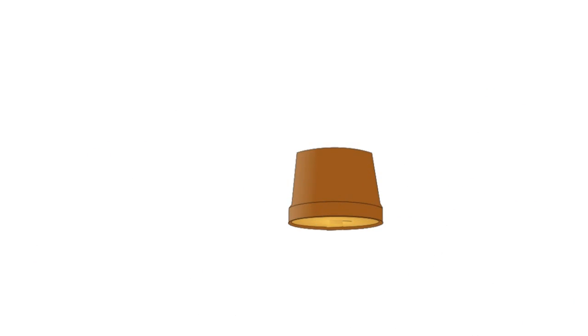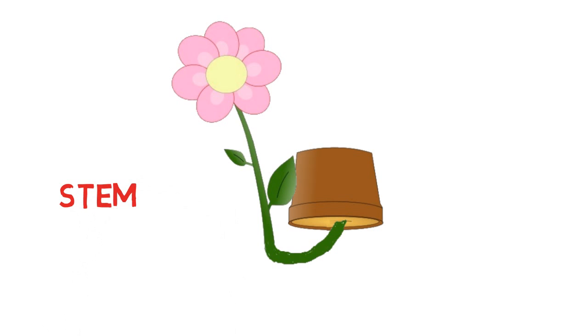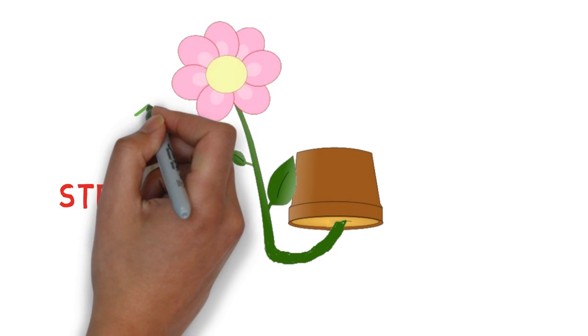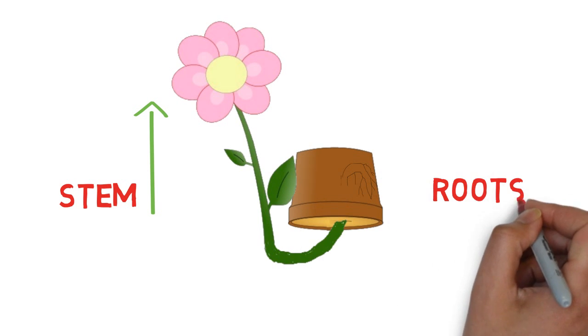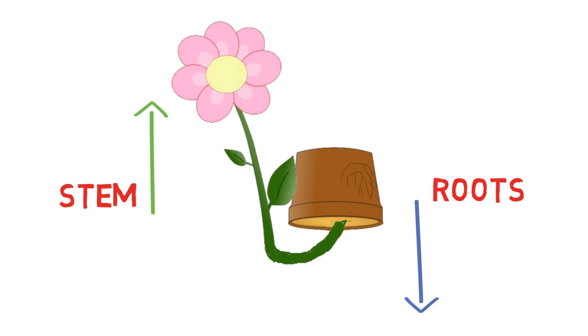Suppose you have a seedling in a pot and you turn it upside down. Then, the stem will take a U-turn and start growing in upward direction against the gravity. So the stems always grow in a direction opposite to gravity and roots always grow in the direction of gravity. In short, plants can sense gravity.